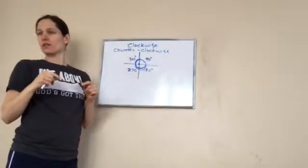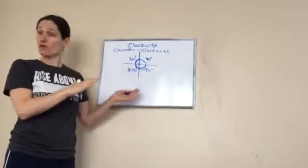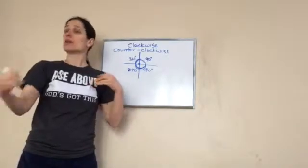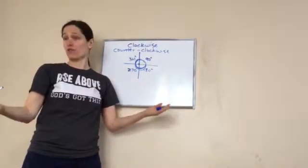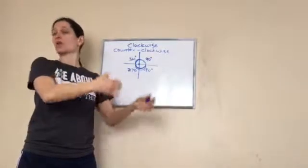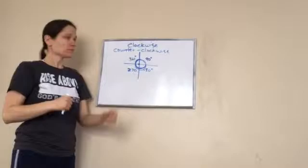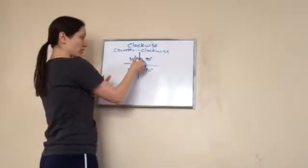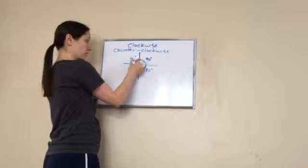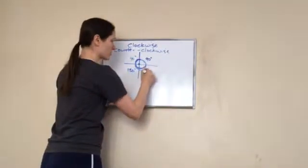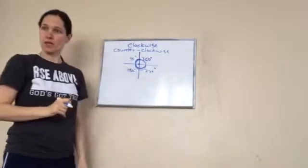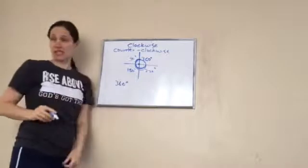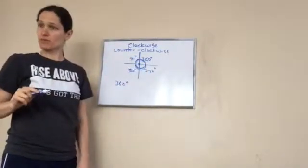The opposite is counter. You may have heard of a counter offer — someone offers to buy your house, you want to sell for $150,000, they give you a counter offer of $140,000. Counter basically means opposite. So clockwise is going the way the clock goes; counterclockwise is going the opposite way. A complete turn around is 360 degrees. Good to know that a full circle is 360 degrees.